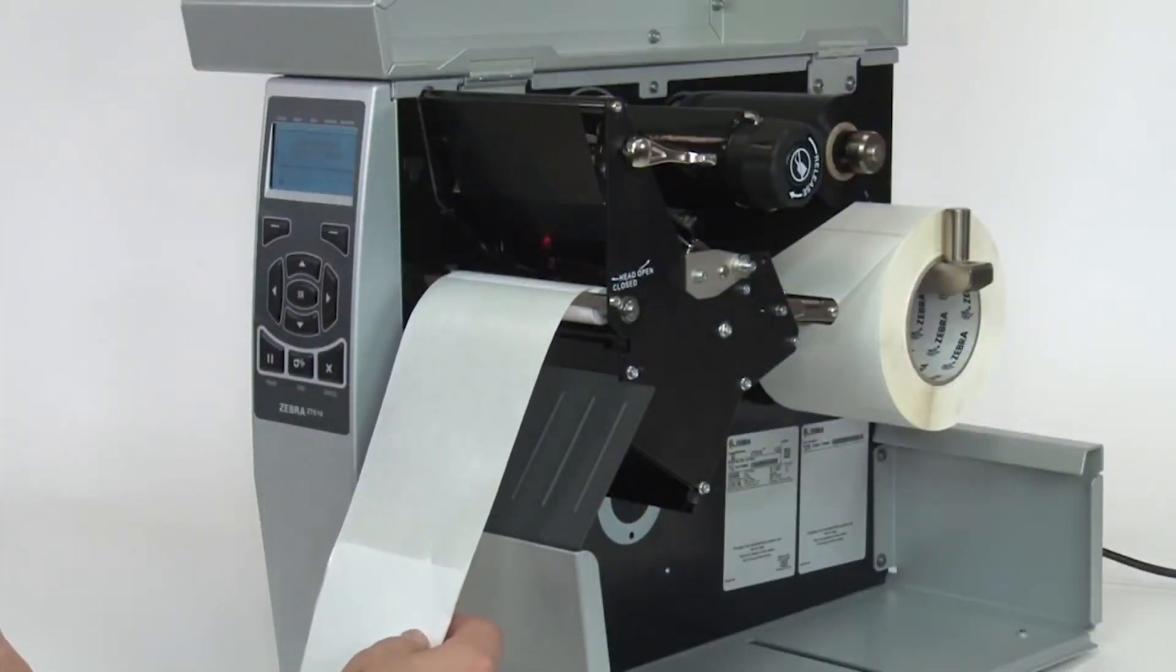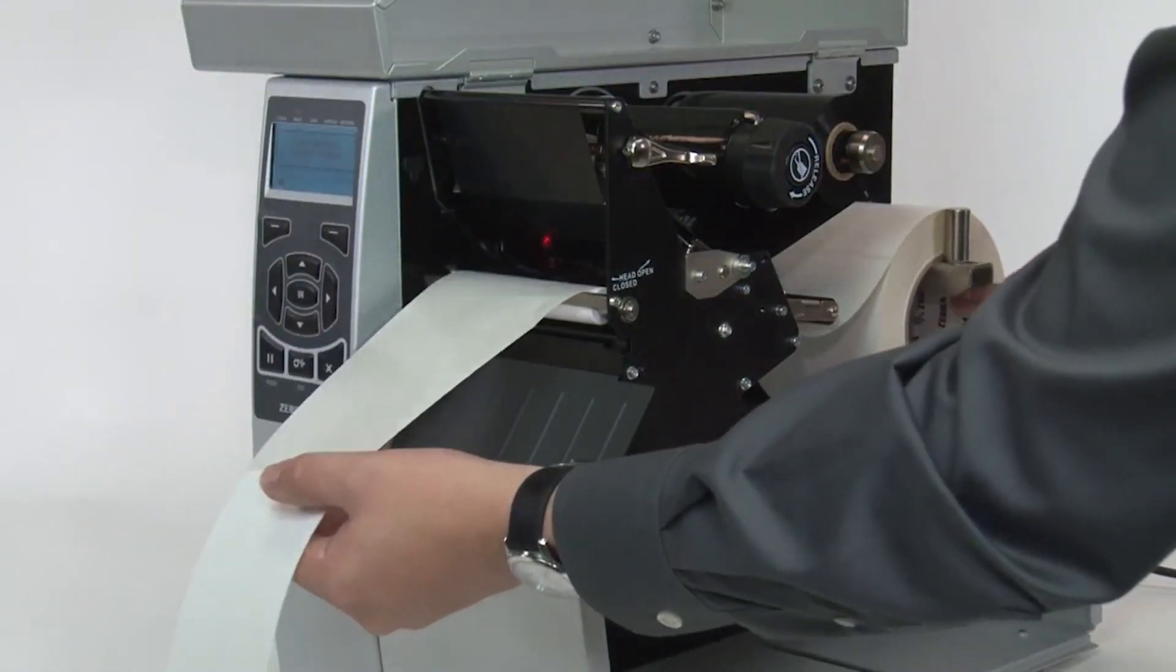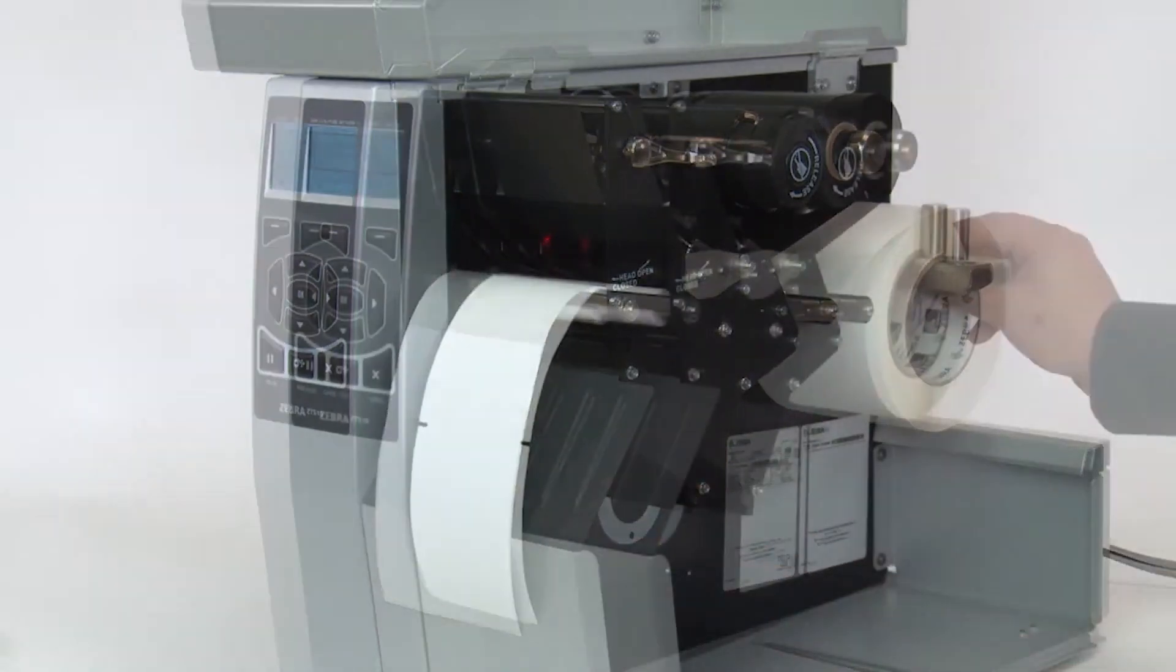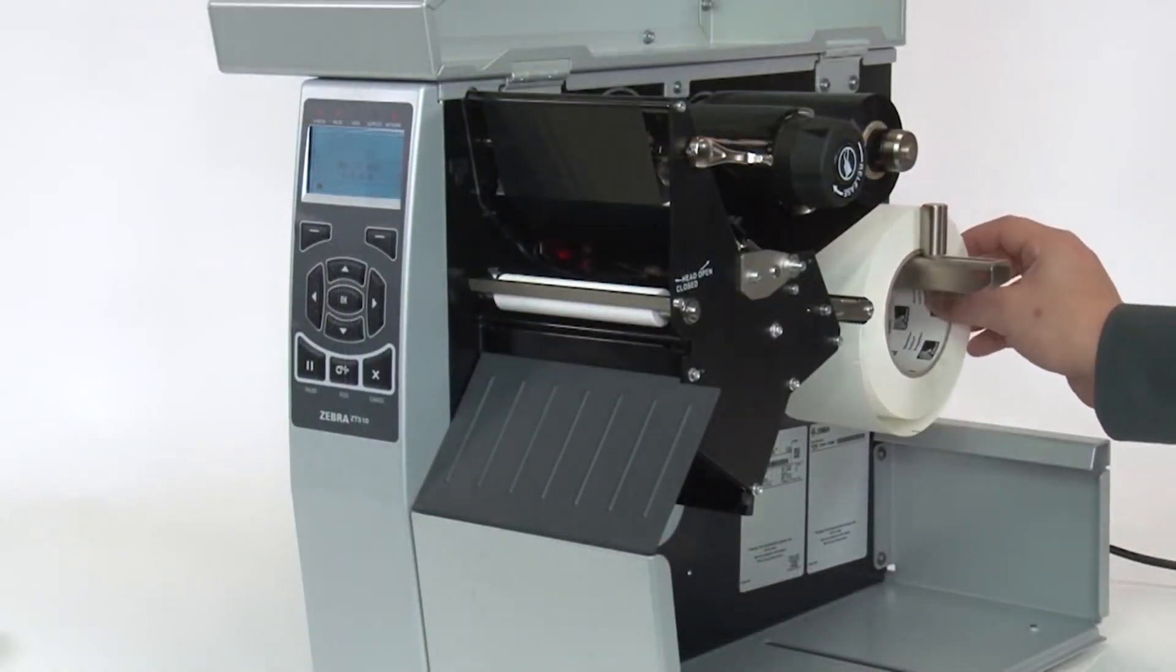If your media has a gap, also referred to as a web, remove labels and rewind the roll to ensure only liner is under the media sensors. If your media has holes or notches, or is a continuous roll with no start position features, remove the media entirely.